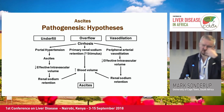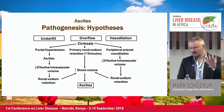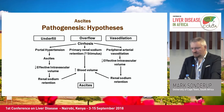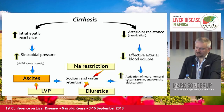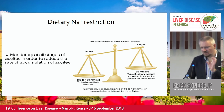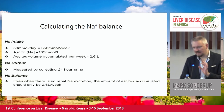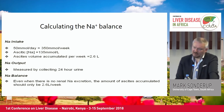Moving to ascites: the pathogenesis involves underfill, overflow, and vasodilatory theories, all based on cirrhosis driving splanchnic bed vasodilation, activation of neuroendocrine responses, and ultimately salt and water retention. To manage ascites you need sodium restriction, diuretics, or large volume paracentesis. Sodium restriction is really quite important — on a proper low-sodium intake, patients should not be producing more than 2.6 litres of ascites per week. You can calculate this by measuring the patient's urinary sodium, and if it's elevated, they are clearly not adhering to a reduced sodium diet.